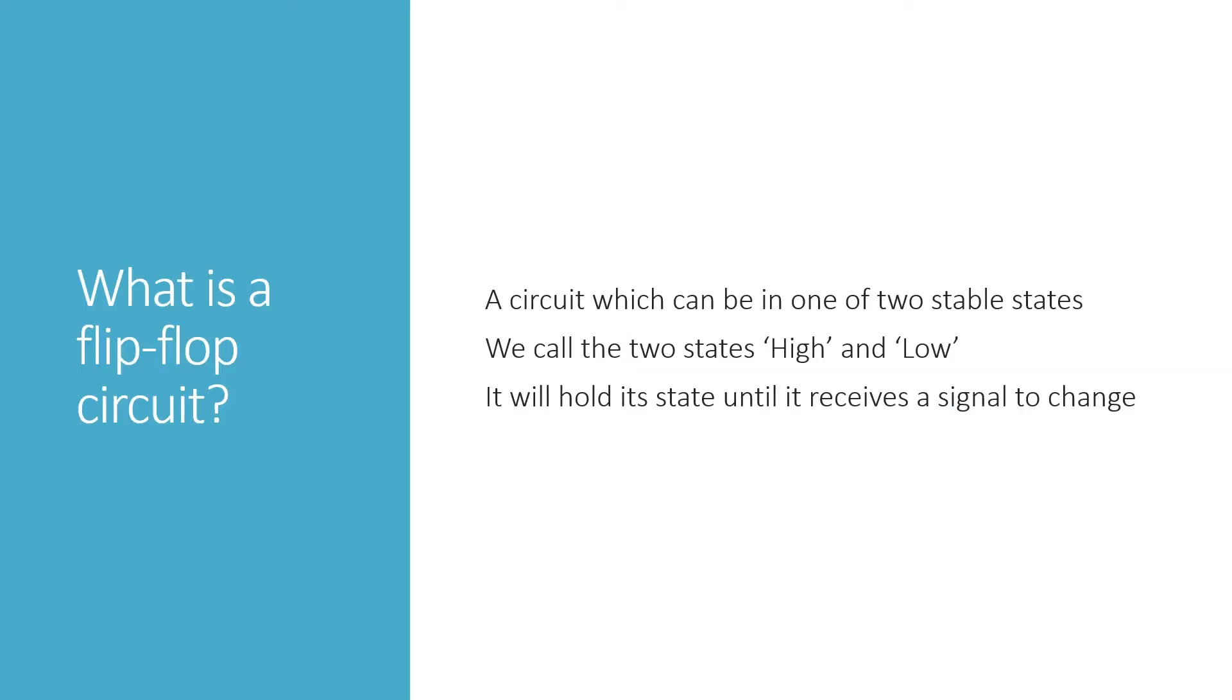So a flip-flop circuit is one that holds its state. It can be in one of two stable states, equivalent to the ones and zeros of binary maths. We call the two states high and low when we're thinking about it in circuit terms. Basically that's a circuit that has electricity going through it and one that doesn't. And it will hold that state until somewhere else in the computer sends it a signal to change.